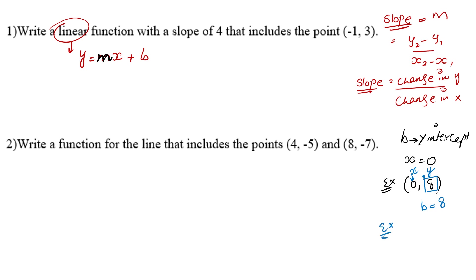Another example: let's look at the point (0, 5). We know the first value is x and the second is y. So in our case, when x is 0, the y-intercept will be 5.